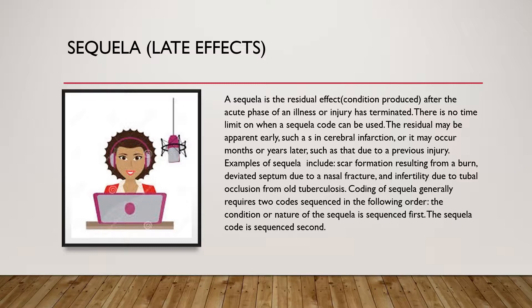Coding of sequela generally requires two codes, sequenced in the following order. The condition or nature of the sequela is sequenced first, and then the sequela code is sequenced second.